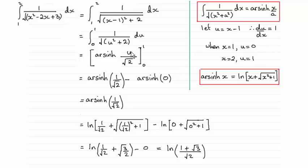By substituting that in, we get arsinh of u over root 2, evaluated from 0 to 1. Putting those values through, you get arsinh of 1 over root 2. Then I use this result you should be familiar with: arsinh of x equals the natural log of x plus the square root of x squared plus 1.